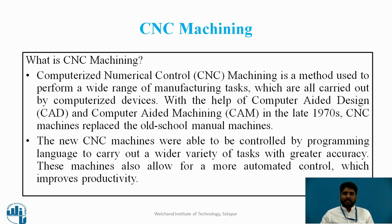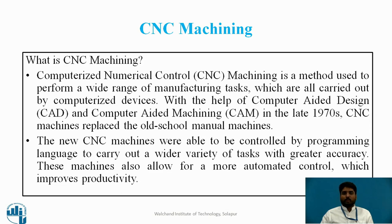In the late 1970s, CNC machines replaced the old manual machines such as lathe machines. The new CNC machines were able to be controlled by programming language to carry out a wider variety of tasks with greater accuracy. These machines also allow for more automated control, which improves productivity.